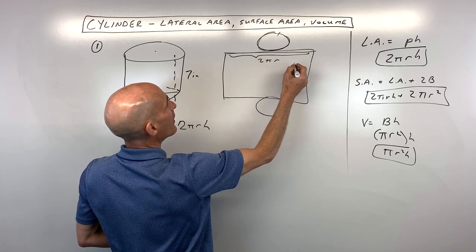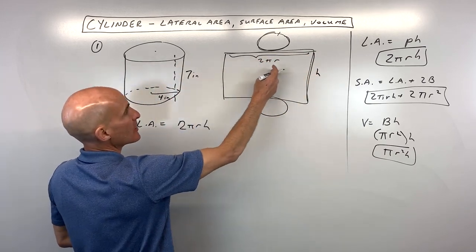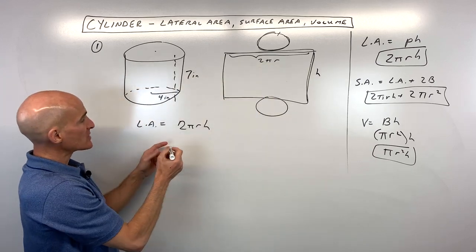This right here represents the circumference of the circle, which is 2πr, times the height, and that's the area of a rectangle. So that's where that formula comes from.